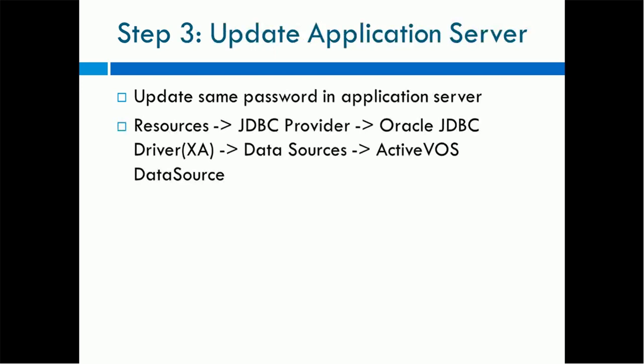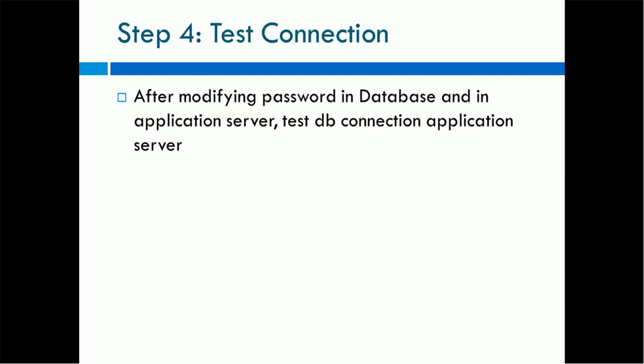The third step is to update the application server. Use the same password you changed in the database and update it in the application server. In JBoss, you need to go to Resources > JDBC Provider > Oracle JDBC Driver > XA Data Sources, and find the Activos data source. There you will find the change password section where you can provide the latest password. Make sure the password in the database and the password in the application server are exactly the same.